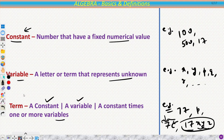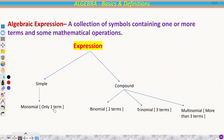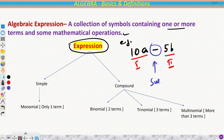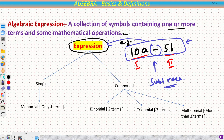Now we will discuss algebraic expressions. An algebraic expression is a collection of symbols containing one or more terms and some mathematical operations. For example, 10a − 5b has two terms: 10a is term 1 and 5b is term 2, joined by the subtraction operator. This is known as an expression.